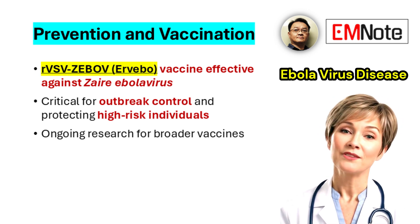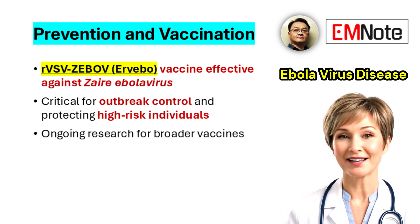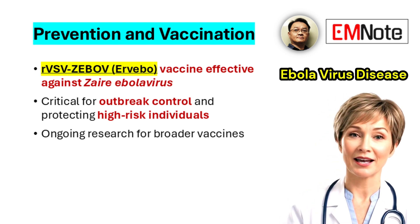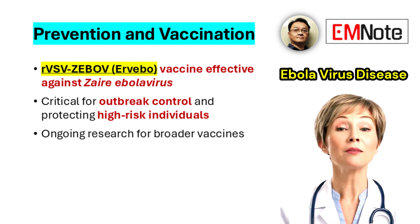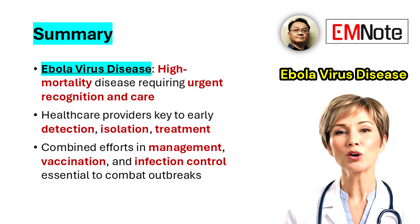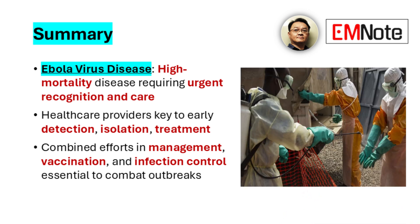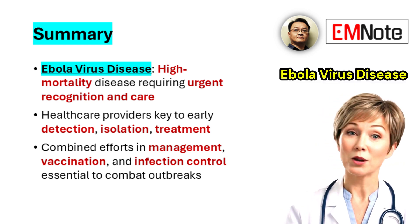Vaccination strategies have proven effective in outbreak control. The rVSV-ZEBOV vaccine, also known as Ervebo, is effective against Zaire Ebola virus and is recommended for use in outbreak settings among individuals at high risk. In conclusion, healthcare providers must remain vigilant for potential cases, apply strict infection control measures, provide comprehensive supportive care, and utilize available therapeutic and preventive interventions to improve patient outcomes and reduce transmission.